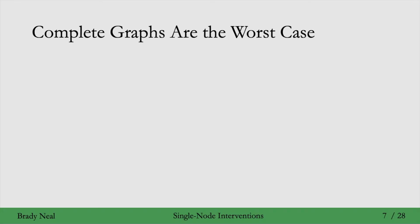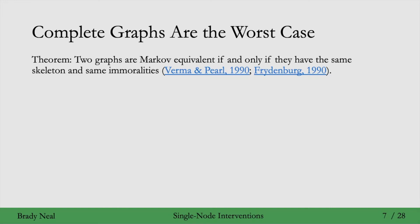Recall that complete graphs are graphs where there is an edge between every pair of variables. These graphs, if you look at their independencies under the Markov assumption, encode no independencies. The skeleton is what you get when you take all the edges and undirect them, and an immorality is where you have two parents that share a child but don't have an edge between them.